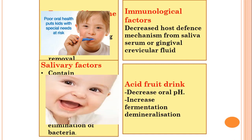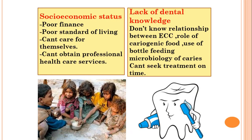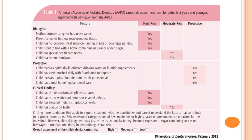Acid fruit drinks decrease oral pH, increasing fermentation and demineralization. Poor oral health and children with special needs are at risk. Socioeconomic status may contribute — poor finances and poor standard of living mean they are incapable of obtaining professional healthcare services. Lack of dental knowledge means they don't understand the relationship between ECC, cariogenic food, bottle feeding, microbiology of caries, and cannot seek timely treatment.